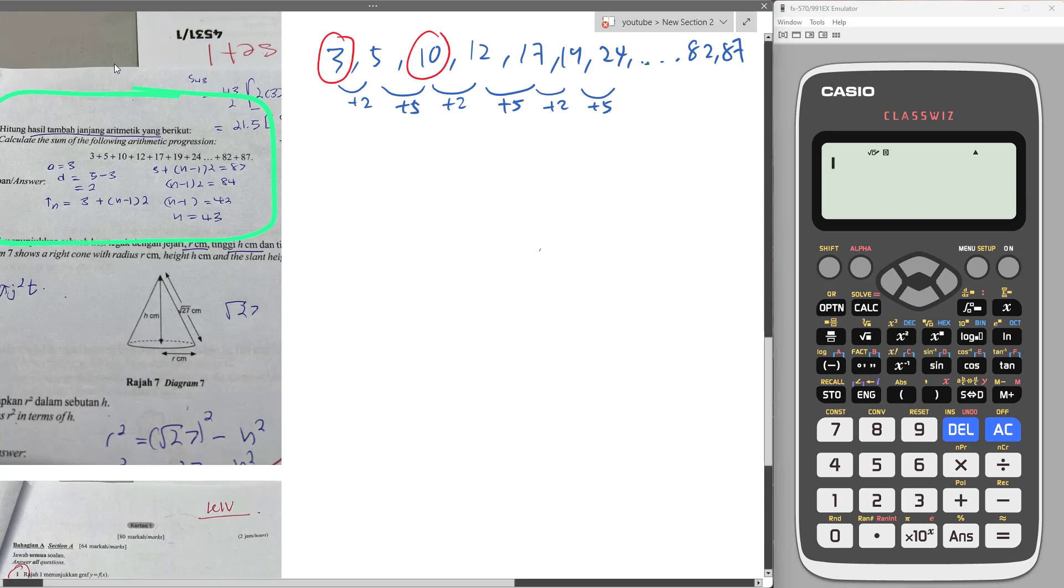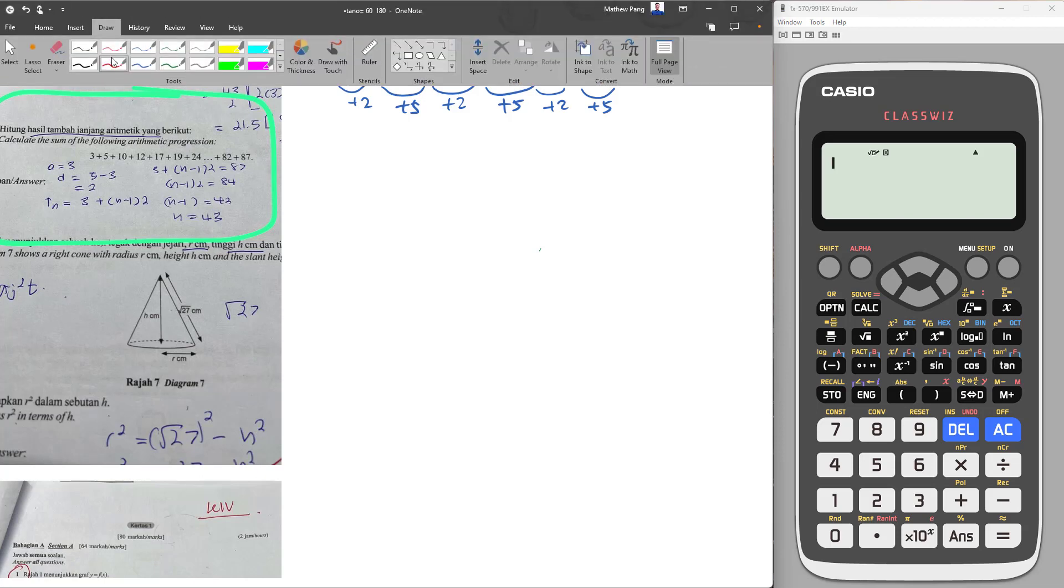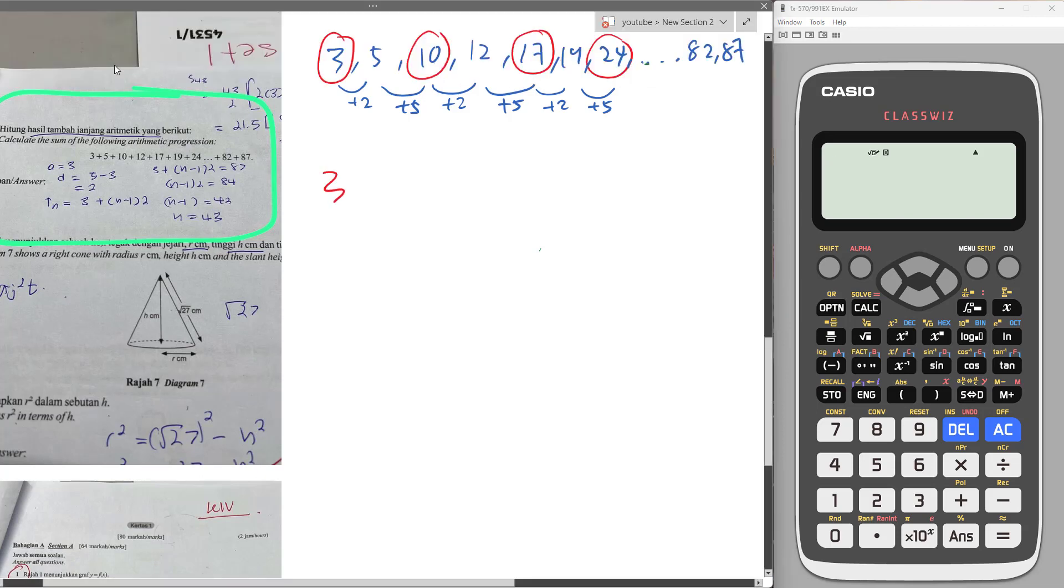I'm going to take the 1st, 3rd, 5th, 7th and so on to form the arithmetic progression. So I have 3, I have 10, I have 17, I have 24. You can see right now all of them is plus 7, isn't it? This makes sense. So this progression is fine.